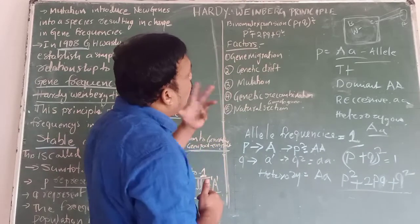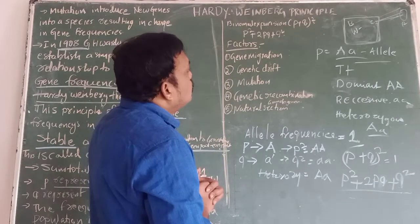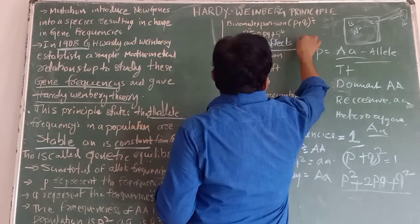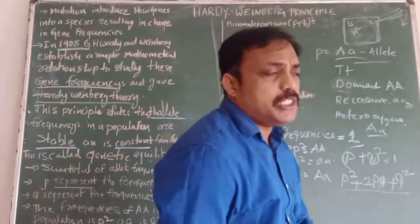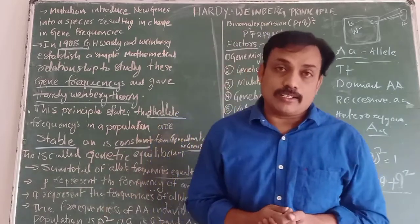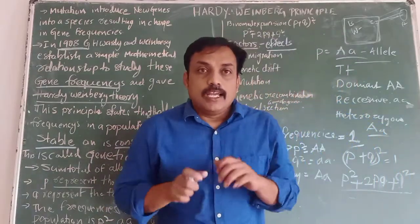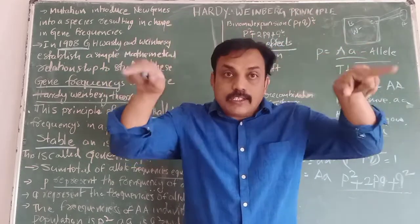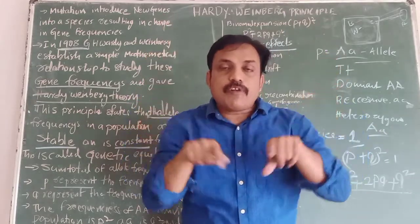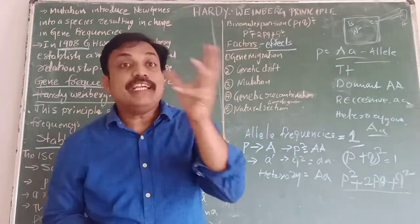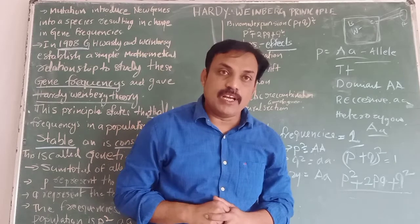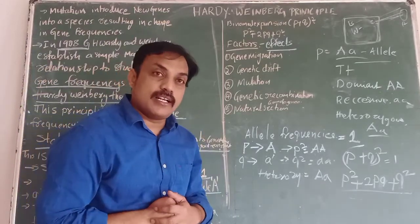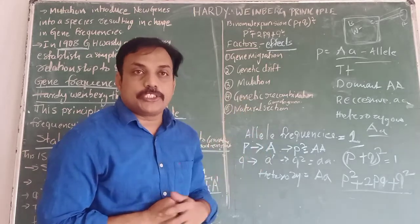As per the Hardy-Weinberg principle, in a particular population the gene pool is constant and frequencies of alleles always remain stable. But when these allele frequencies change, evolution occurs. Evolution means gradual changes in a particular population or organism. What are the factors affecting evolution in that particular population?